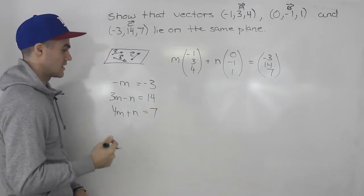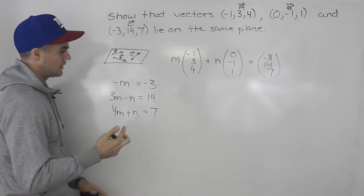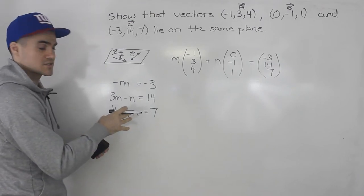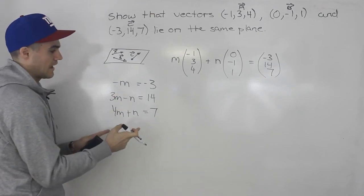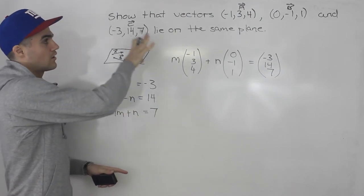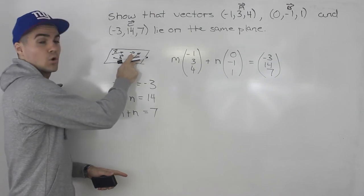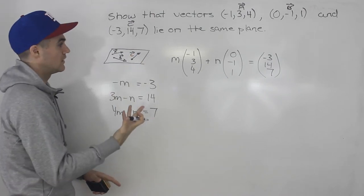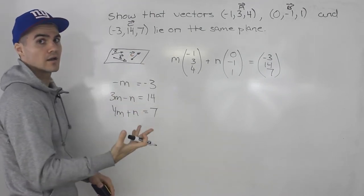So we got three equations, but we only have two unknowns. So we only have to pick two of the equations to solve for m and n, and then we have to show that it holds in the third equation. If it holds in the third equation, then all three vectors are coplanar. If it doesn't hold, then they are not coplanar.